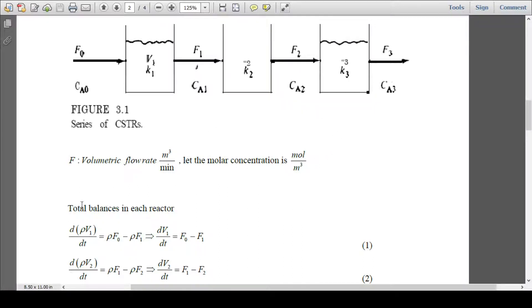For the total mass balance in each reactor, mass inside the reactor is volume times density. So ρV1/dt, mass coming in is ρF0, going out is ρF1. Since density is constant, dV1/dt equals F0 minus F1.